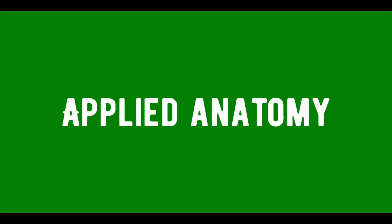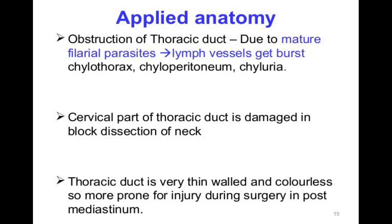The thoracic duct may be obstructed by the growth of mature filarial parasites, sometimes causing bursting of lymph vessels, manifested by collection of chyle in the pleura and peritoneal sacs. If chyle is present in the pleura, it is called chylothorax. If accumulated in the peritoneal sacs, the condition is called chyloperitoneum. Chyluria is a medical condition involving the presence of chyle in the urine, where urine appears milky white in color, caused by filariasis due to the parasite Wuchereria bancrofti.